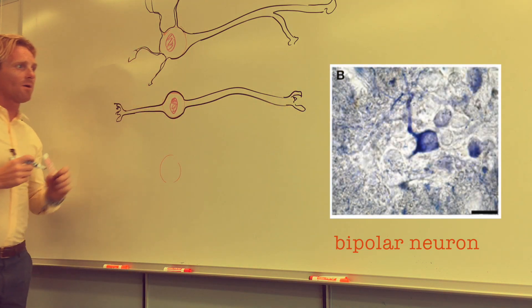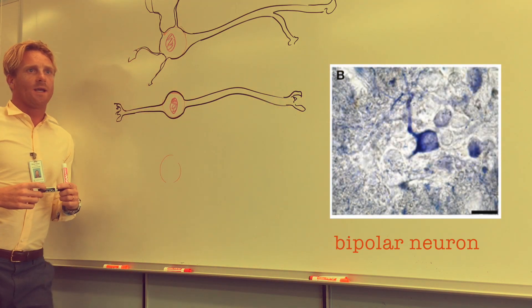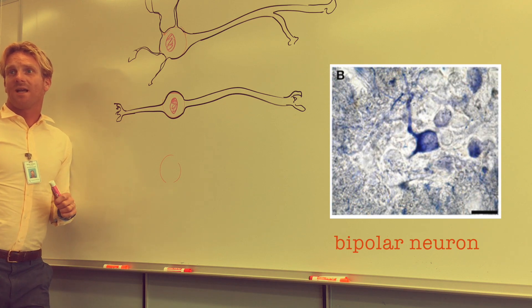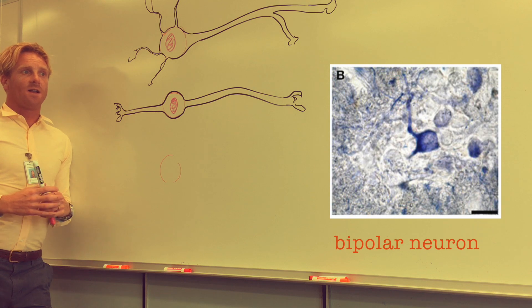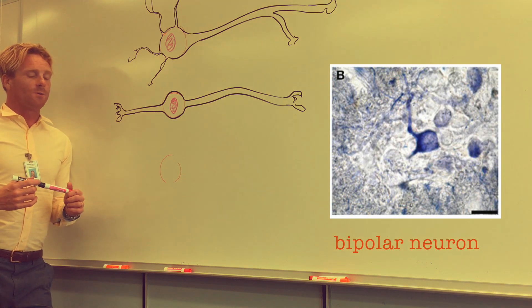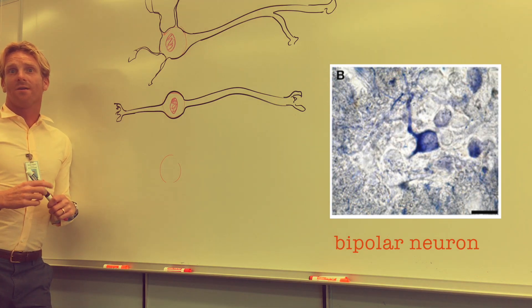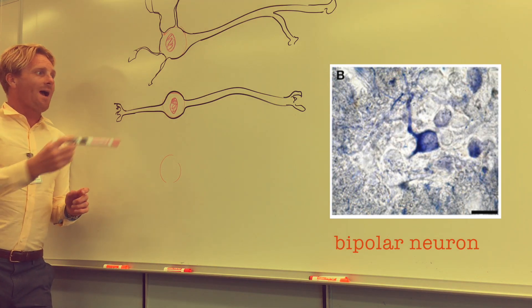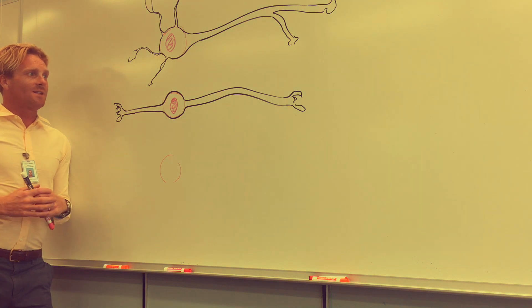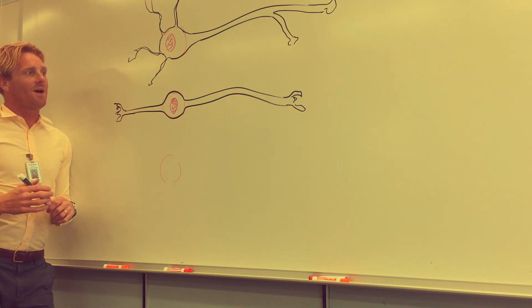You'll come across these quite frequently next to sensory receptors, like the photoreceptors within our retina. Also, you'll find these bipolar neurons connected to hair cells within our inner ear. So these are commonly afferent neurons that are connected to sensory receptors, like those found in the eye and the ear.